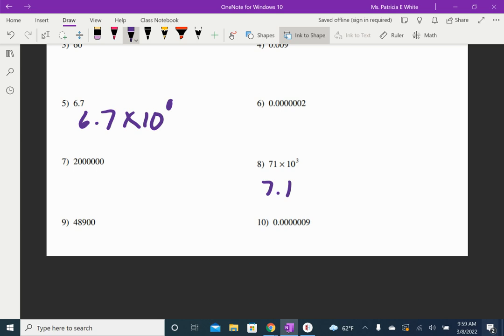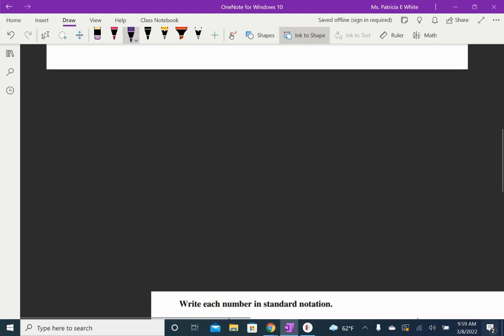So I'm going to make this number smaller, so that means I have to do what to the exponent? If I make the number smaller, the exponent has to get larger. How many spaces did I move the decimal? So I have to add 1. So that's going to be 7.1 times 10 to the fourth.